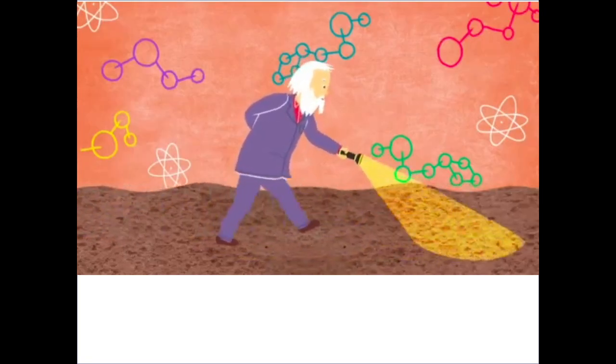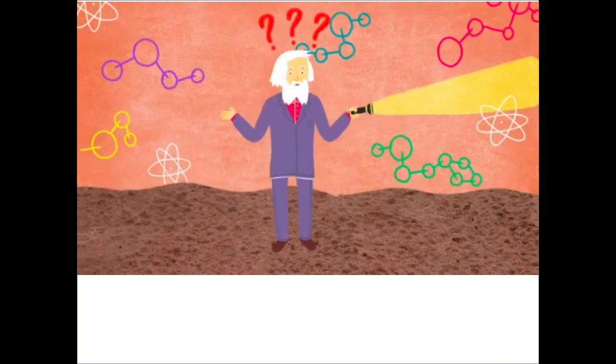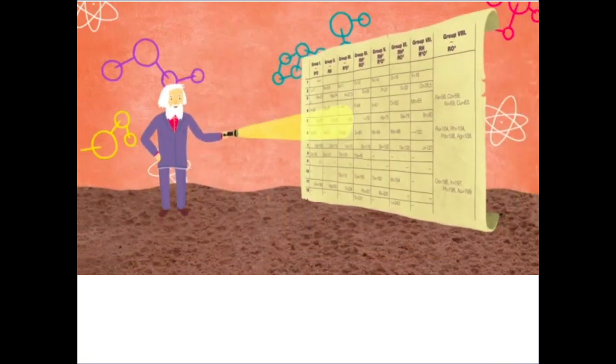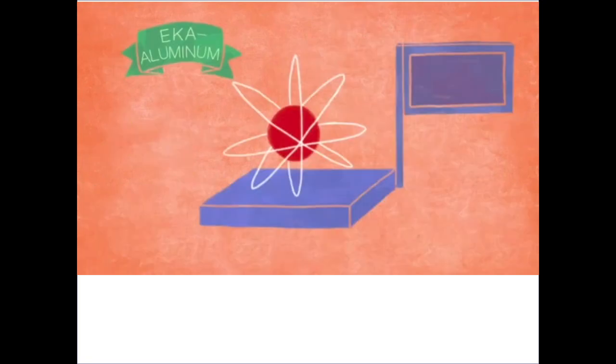Nobody's found eka-aluminum yet, so we don't know anything about it, right? Wrong. Based on where it's located, I can tell you all about it. First of all, an atom of eka-aluminum has an atomic weight of 68, about 68 times heavier than a hydrogen atom. When eka-aluminum is isolated, you'll see it's a solid metal at room temperature. It's shiny, it conducts heat really well, it can be flattened into a sheet, stretched into a wire, but its melting point is low, like freakishly low. Oh, and a cubic centimeter of it will weigh 6 grams.